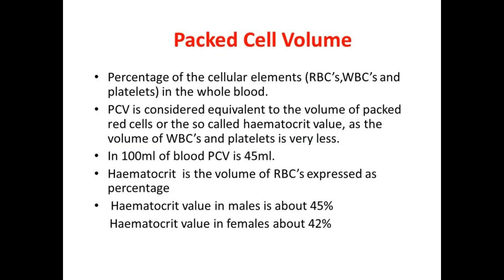Packed cell volume is the percentage of cellular elements — RBC, WBC, and platelets — in whole blood. However, PCV is considered equivalent to the volume of packed red cells (the hematocrit value) since the volume of WBCs and platelets is very small. In 100 ml of blood, PCV is 45 ml. Hematocrit value in males is about 45% and in females about 42%.